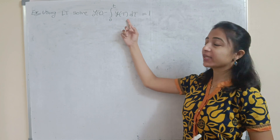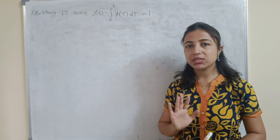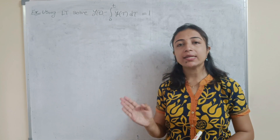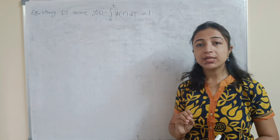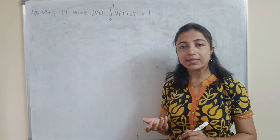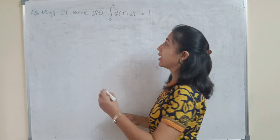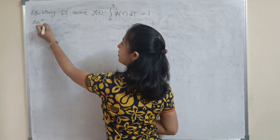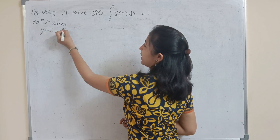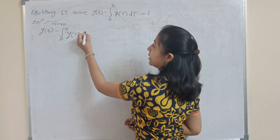Now let's look at the next example. Using Laplace transformation, we have to solve: y(t) minus the integral from 0 to t of y(T) dT equals 1. This is again a differential equation type problem, but here an integration appears. We apply the Laplace transformation and then take the inverse to get y(t). The form is a bit different — instead of y' or y'', it is written with an integral.